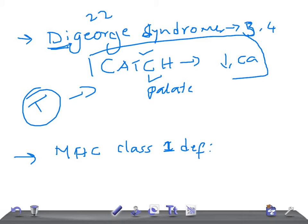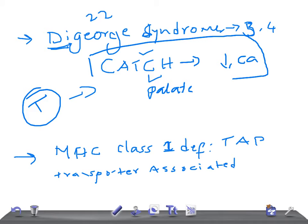Now let's talk about MHC Class 1 Deficiency. For USMLE, just remember that there is a failure of TAP1 molecules to transport peptides to the endoplasmic reticulum. TAP stands for Transporter Associated with Antigen Processing. This failure results in a selective T-cell deficiency.